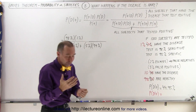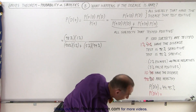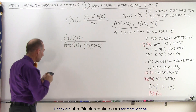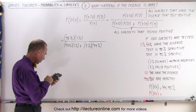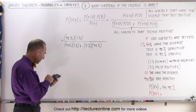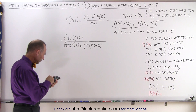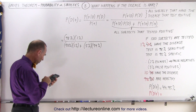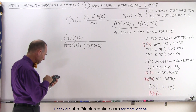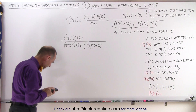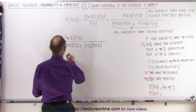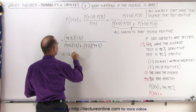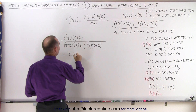Now we're ready to calculate the new probability. In the denominator we get 0.98 times 0.01 plus 0.05 times 0.99. We multiply the numerator, 0.98 times 0.01, and we get 16.53%. So the probability is now equal to 16.53%.